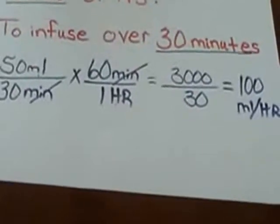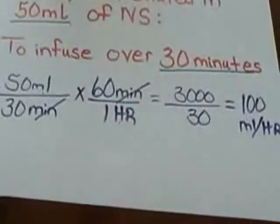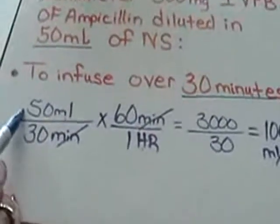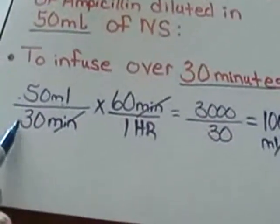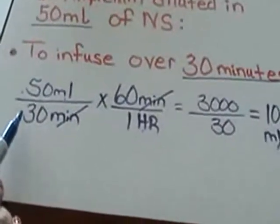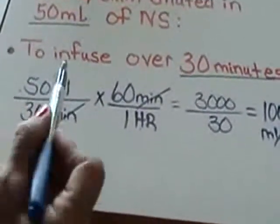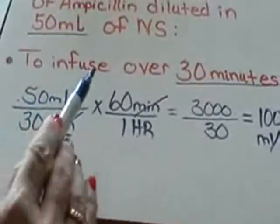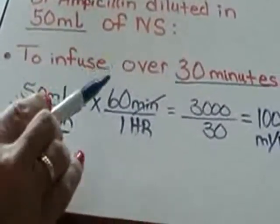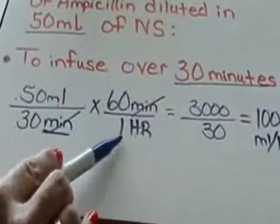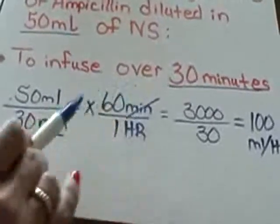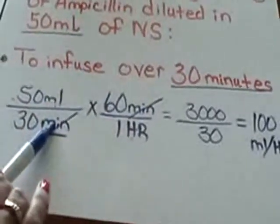Once again, with this type of problem, we always put our volume or our amount to be delivered, milliliters, on the top of our numerator. Our time that we infuse it over is the denominator, and in this case, it's minutes. When we are working with minutes, we have to put in an extra step and say there are 60 minutes in one hour. Always remember that your minutes need to go on top because they have to be able to cancel each other out.